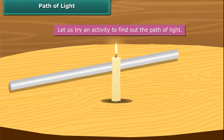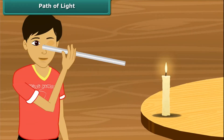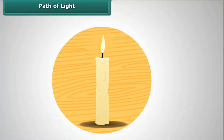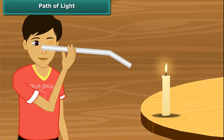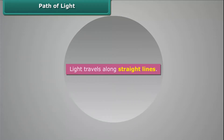Take a lighted candle and a straight pipe. Now look at the lighted candle through that straight pipe. You can easily see the candle from that pipe. Now take a bent pipe and look at the candle through it. Are you able to see the candle's flame through it? Probably not. So, now you know that light travels along straight lines.